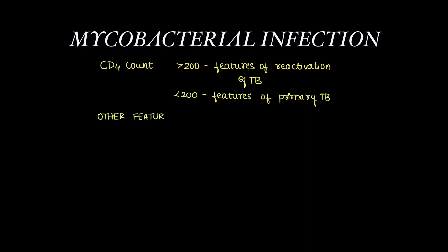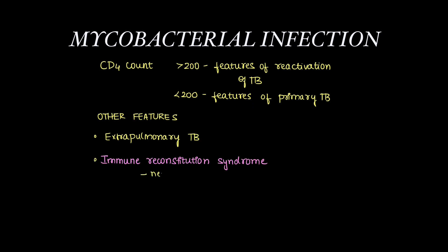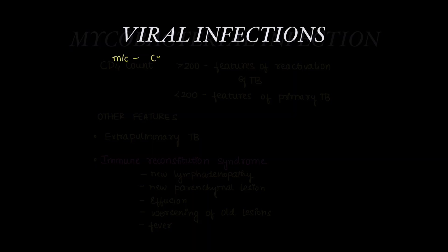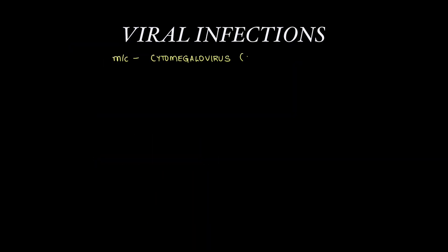Other features include extra-pulmonary tuberculosis. When HIV and mycobacterial infection co-exist, we can see immune reconstitution syndrome, which can present as new lymphadenopathy, new parenchymal lesions, pleural effusion, worsening of old lesions, and fever.